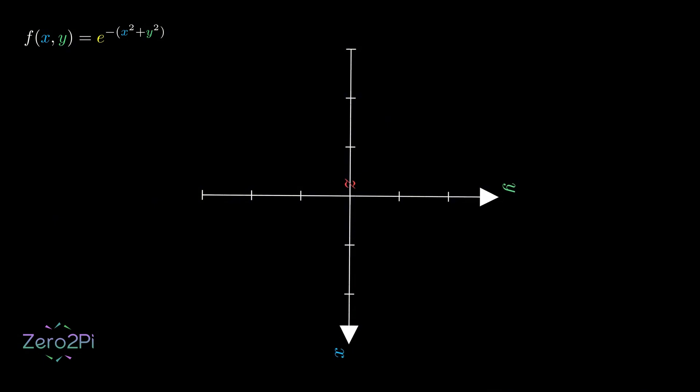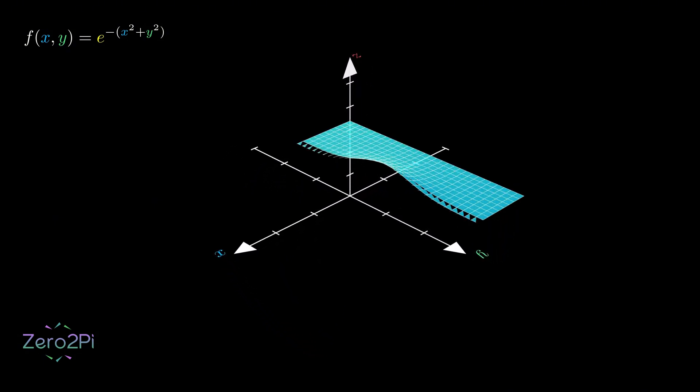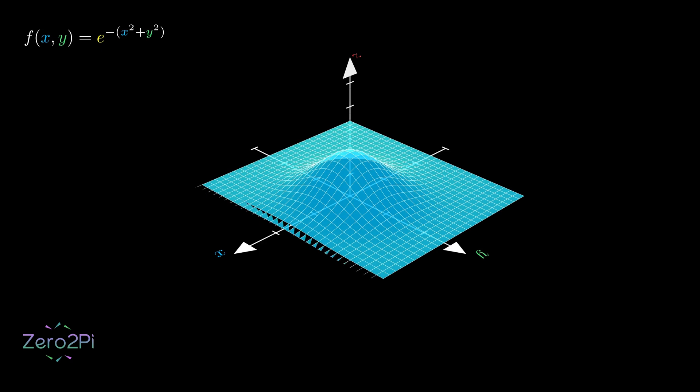Now, we'll have a 3D space and a surface instead of a 2D curve. This surface represents our Gaussian bump function's output. The height or z value is determined by the x and y coordinates on the floor.